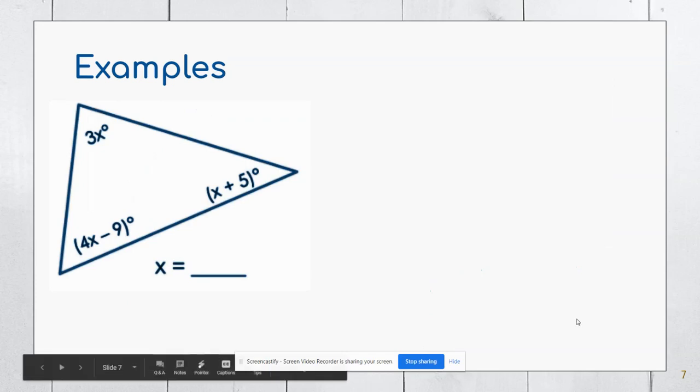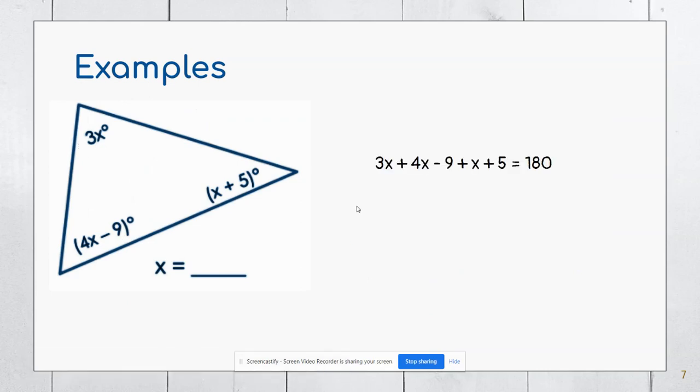One more example here. Same thing as example number 2, I'm going to add these three expressions together. So 3X plus 4X minus 9 plus X plus 5 equals 180 degrees. I'm going to combine like terms, and then I'll add 4 to the other side to give me 8X equals 184, dividing by 8 gives me that X is 23. So that was the triangle sum theorem.